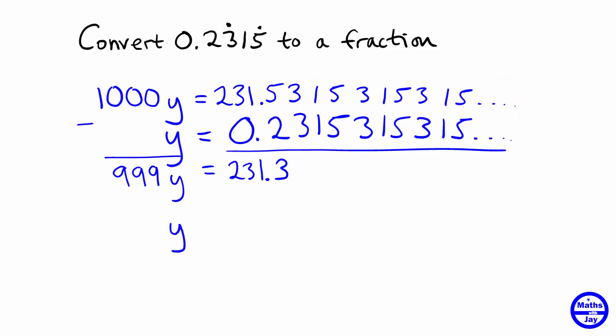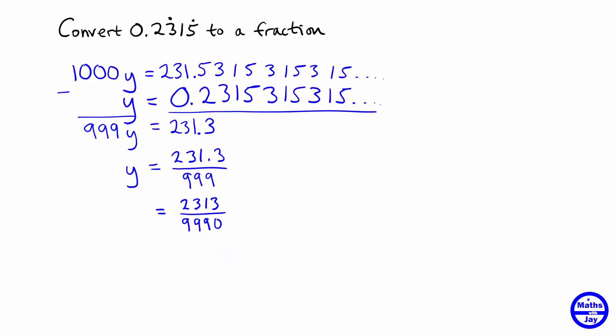So now we know that we can write y as dividing both sides by 999. We can write y as 231.3 divided by 999. So that kind of looks like a fraction but we've got a decimal in it, so that's not really a good idea. So what I'm going to do first of all, to get rid of that decimal point, I'm going to multiply numerator and denominator by 10. So we've got 2313 over 9990. So just multiplied top and bottom by 10 there. And now we can cancel this fraction down.